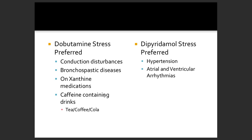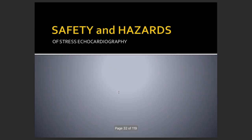Even among pharmacological tests, different types are preferred for different subsets: if someone is hypertensive or has atrial or ventricular arrhythmias, you prefer dipyridamole stress. However, if the patient has AV block, bronchospastic disease like asthma, or has been taking caffeinated drinks like tea, coffee, or cola, you should prefer dobutamine stress echo.